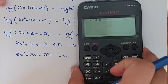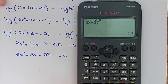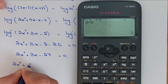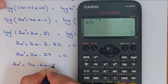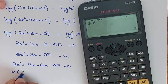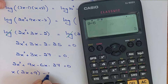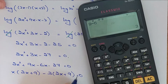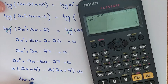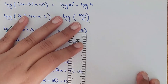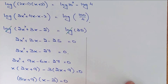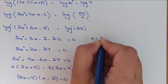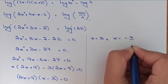Let me factorize: 2 times minus 27 is minus 54; 6 times 9 is 54 and 9 minus 6 is 3. So 2x squared plus 9x minus 6x minus 27 equals 0. Taking x common leaves 2x plus 9; taking minus 3 common also leaves 2x plus 9. The two factors are (2x plus 9)(x minus 3) equals 0. The two solutions are x equals 3 and x equals minus 9/2.